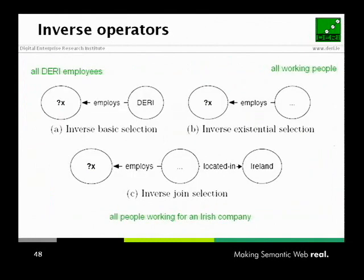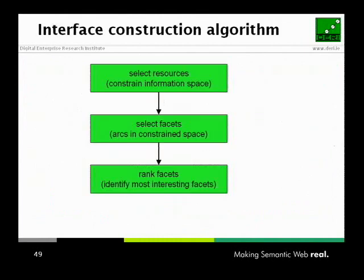In an RDF graph, the direction of arrows is often quite arbitrary — it depends on whoever wrote the graph. Very often you want to query the graph in the other direction than the data is stored. If you have data saying 'Derry employs somebody', you want to find everybody employed by Derry, or everybody employed by somebody in Ireland. So you have the same operators but going in the other direction, and you can intersect them as well.